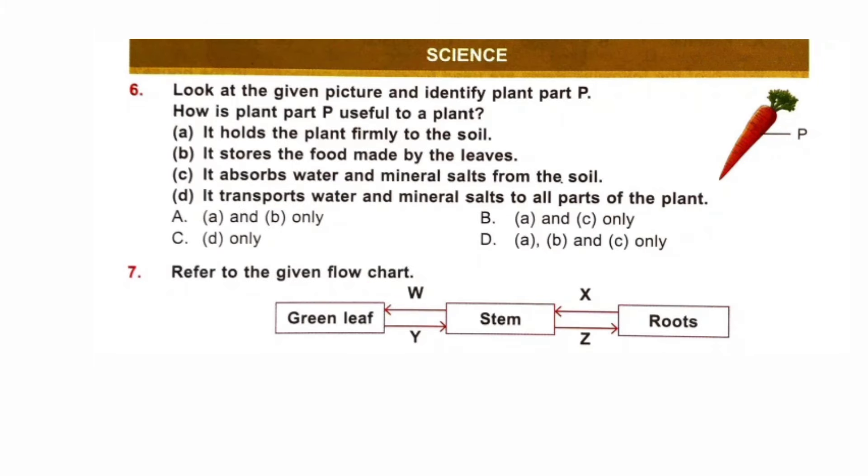Science. Question number 6. Look at the given picture and identify plant part P. How is plant part P useful to a plant? This is a carrot. And carrot is a root. We know that root holds the plant firmly to the soil and absorbs water and minerals from the soil and sends it to the leaves. Also, some roots store food inside it, which is made by leaves. So, option D is correct.